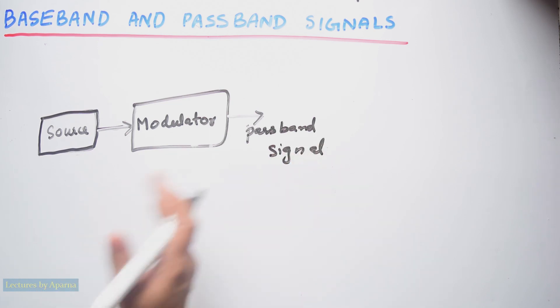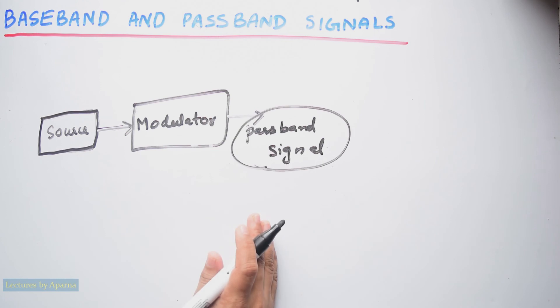An audio signal after modulation will come to higher frequency range which is radio frequency range. Then it is transmitted. So passband signals will be in a high frequency range. Baseband signals will be in a low frequency range.